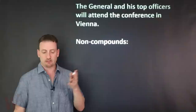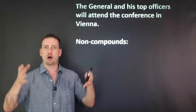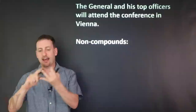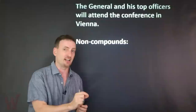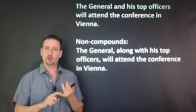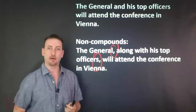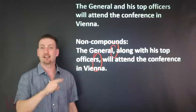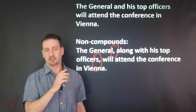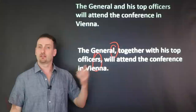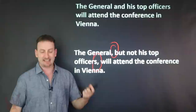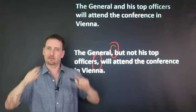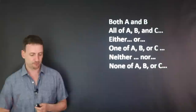One more note about compounds: 'The general and his top officers will attend the conference in Vienna.' That's a compound subject — no comma, and it's plural. But you can only make a compound with AND. If you use 'along with,' 'together with,' 'as well as,' or 'without,' put commas around that prepositional phrase, and the subject remains singular — 'the general.' Only AND creates a true compound subject.